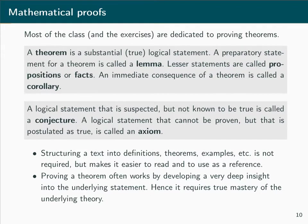So, a lemma is a preparatory statement for a theorem and a corollary is a statement that follows immediately from a theorem. You may have seen these expressions before and you will certainly come across them very frequently once you start reading scientific literature. Other expressions you sometimes find there are a conjecture and an axiom. A conjecture is a logical statement that is suspected to be true but hasn't been proven. A logical statement that cannot be proven by its nature but is just postulated as being true is called an axiom.